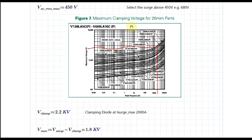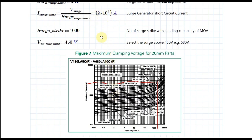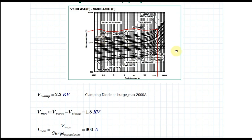Looking at the 20 mm parts — I have selected the V680LA10C. Now, since you have calculated your surge current as 2000 A, go to the datasheet graph and find the line for 2000 A. From there, you can read off the maximum clamping voltage.